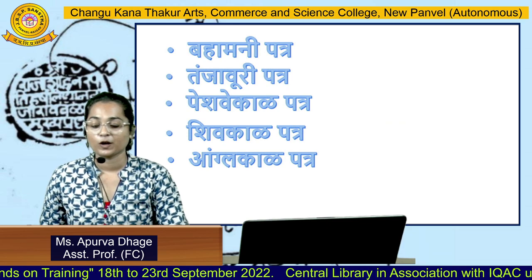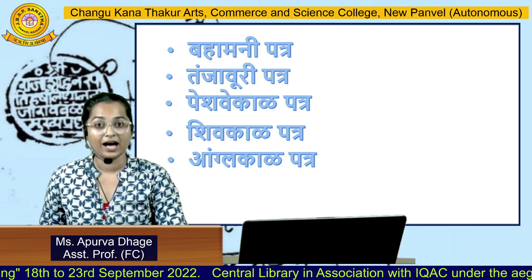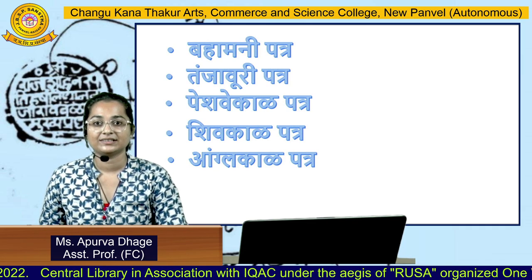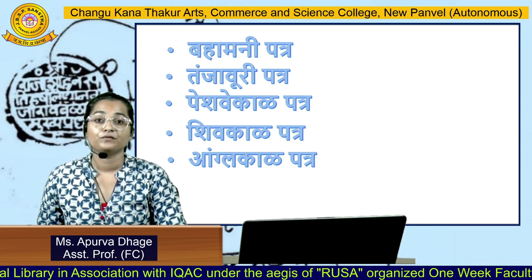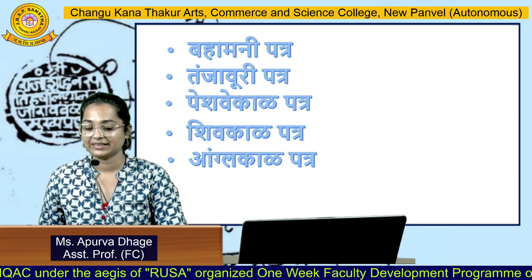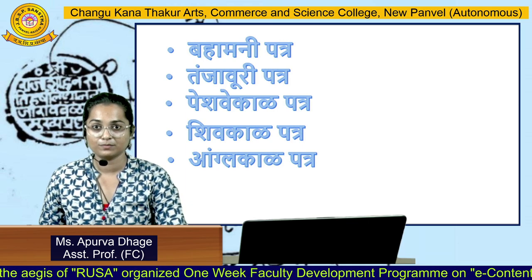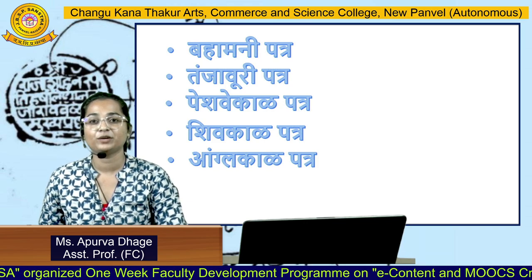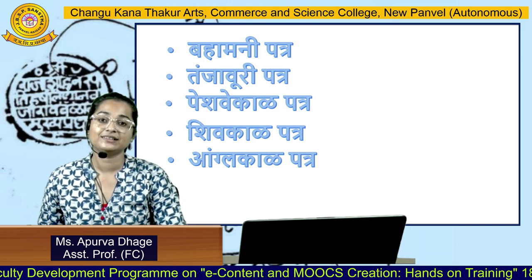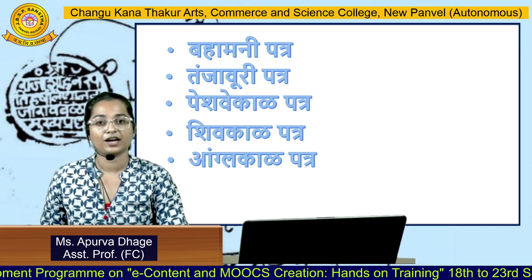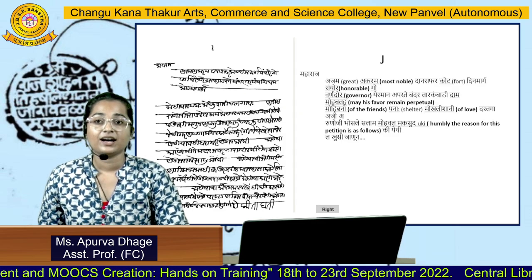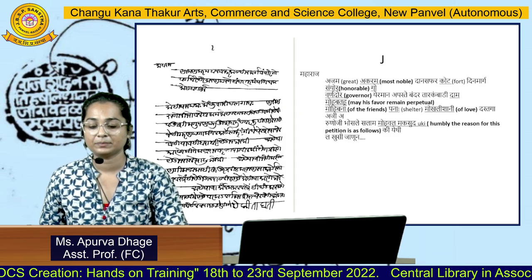Where exactly and in which era can we find Modi letters? We can find them in the Bahamani era — that is, the Bahamani Sultanate. We can find them in Tanjavur, meaning Tanjavur Patra in South India, Tamil Nadu. We can find Modi letters during the Peshwe era, during Chhatrapati Shivaji Maharaj's era, and lastly in the British era as well. The difference across each era is the language used, the jargon used, and also the handwriting style.